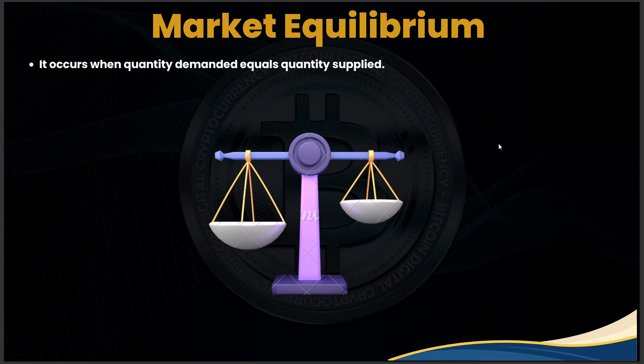Similarly, setting the price below equilibrium can cause excess demand. If a product is given very cheaply or freely, more people will come to buy it than can be served. To cut demand, the seller increases the price — say to five rupees — and eventually demand stabilizes and the product can be sold without issue. This is what market equilibrium describes.